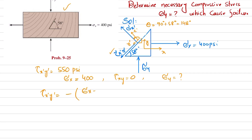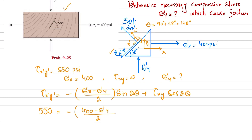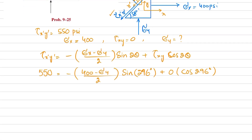We know that the transformed shear stress formula is: tau_x'y' = minus (sigma_x minus sigma_y) divided by 2, times sine of 2-theta, plus tau_xy times cosine of 2-theta. Substituting the values: tau_x'y' is 550, sigma_x is 400, sigma_y is unknown, theta is 148 degrees, so 2-theta equals 296 degrees. This gives: 550 = minus (400 minus sigma_y) divided by 2, times sine of 296 degrees, plus 0 times cosine of 296 degrees.